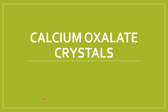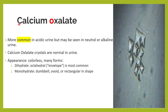Hi friends, welcome to Classes by Lab Doctor. Today in class, let us see about calcium oxalate crystals in the urine. Calcium oxalate is the most common kind of crystal seen in the urine. It is most commonly seen in acidic urine.